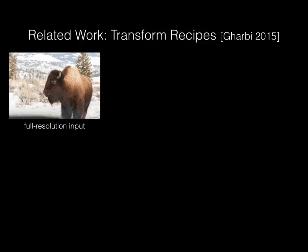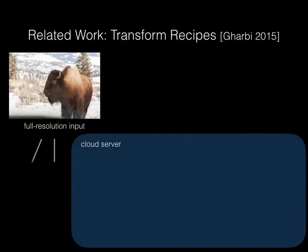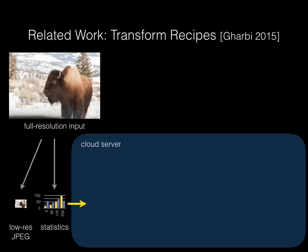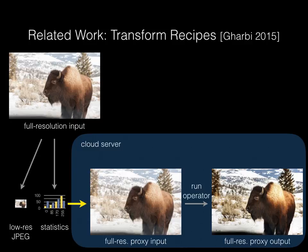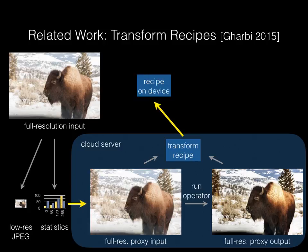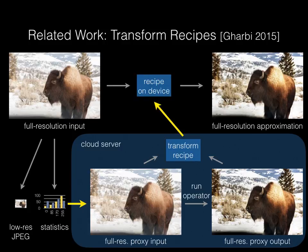At SIGGRAPH Asia last year, Garby and colleagues introduced the idea of transform recipes for the purpose of reducing the power requirements of mobile image processing by offloading it to a cloud server. Instead of uploading the full-resolution image to a server and downloading the full-resolution output, they instead transmit a downsampled JPEG input along with a set of statistics.